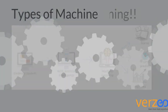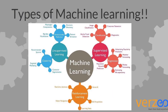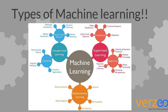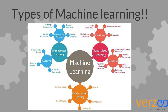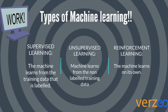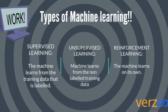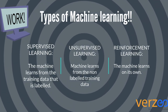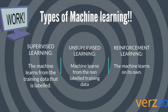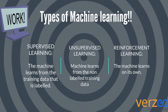Now, what are the types of machine learning? There are three types of machine learning: supervised, unsupervised, and reinforcement learning. In supervised learning, it involves labelled data and is used to predict output. Whereas in unsupervised learning, it involves non-labelled data and is used to find hidden structure.